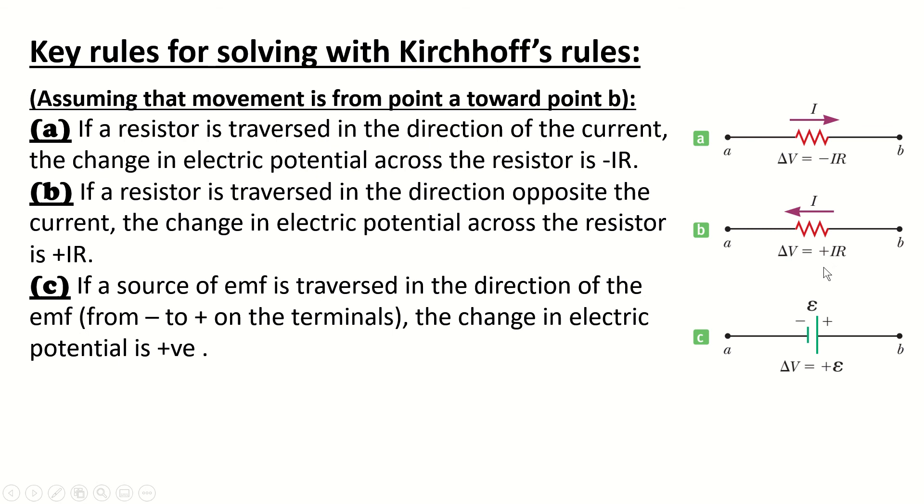Third case, if a source of EMF is traversed in the direction of the EMF from negative to positive direction, or from negative to positive pole on the terminals, the change in electric potential is positive, meaning that you raise the voltage across the circuit or the loop.